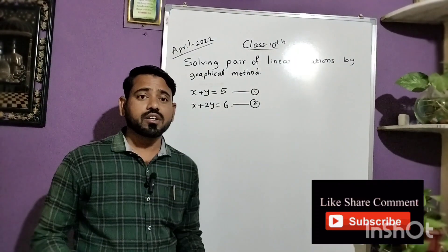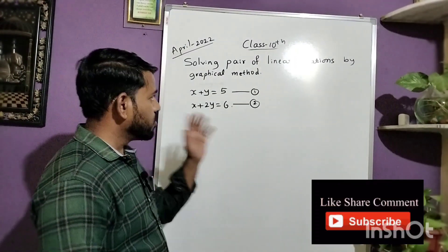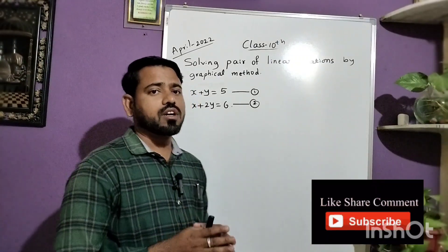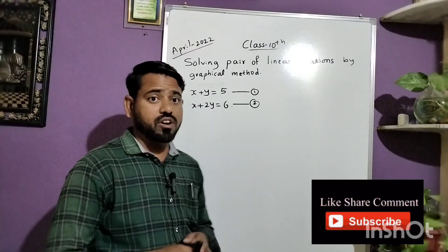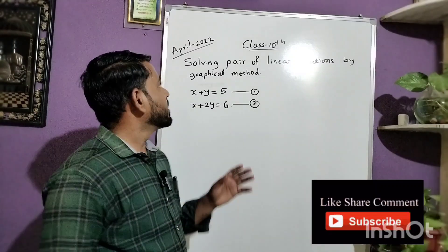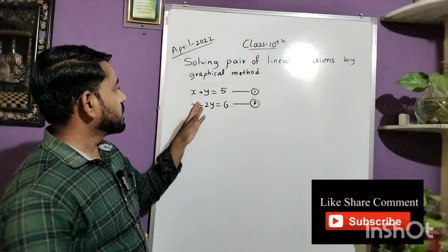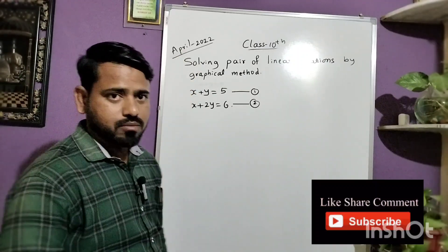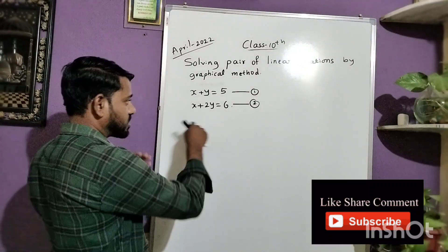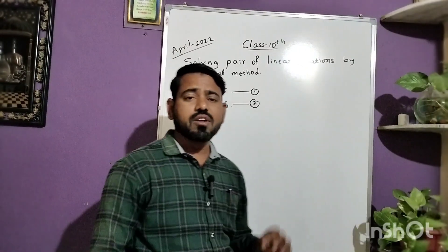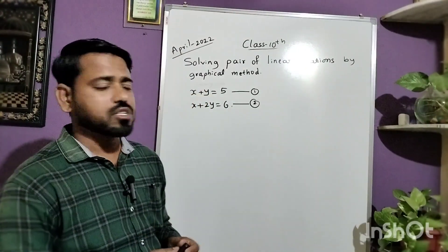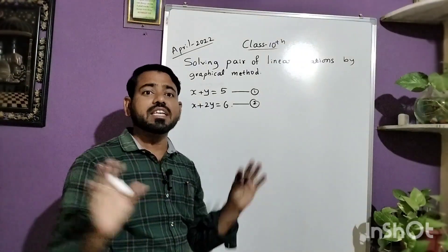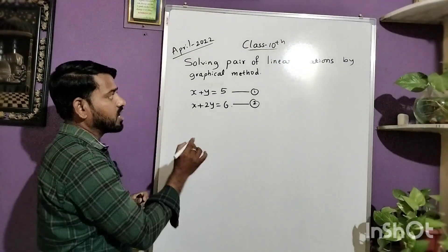Hi students, today we study how to solve a pair of linear equations by graphical method. This is a very easy question and is definitely a fixed question for four marks. This question was asked in the April 2022 annual examination. First, when you face these types of problems, check the coefficient of x and y in the equation. If the coefficient of x and y is 1, it is very easy and you can solve it in a short time.